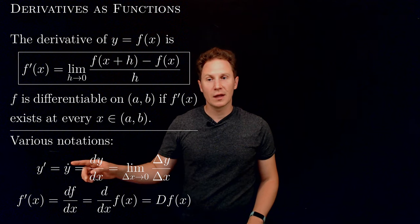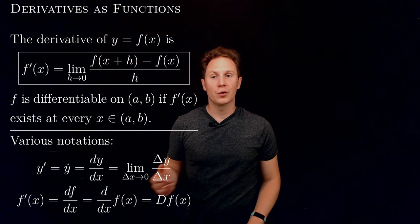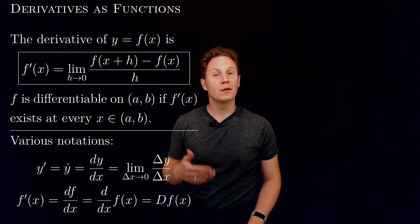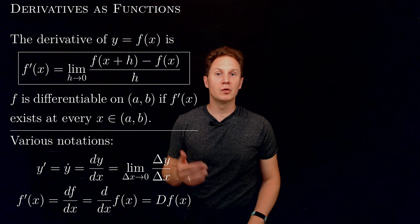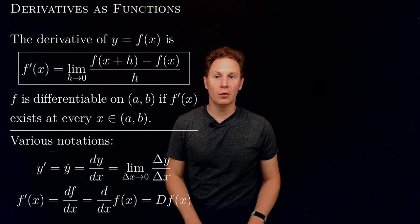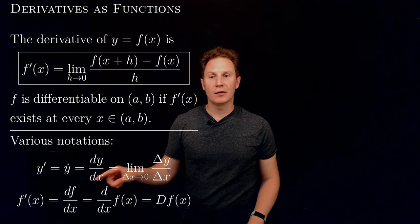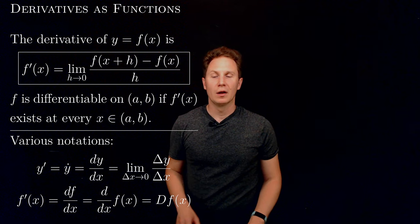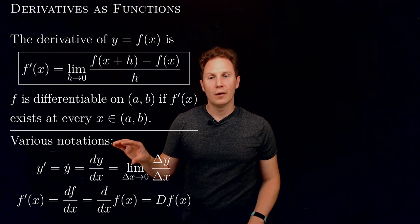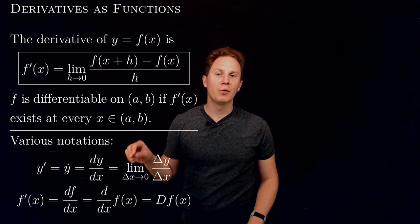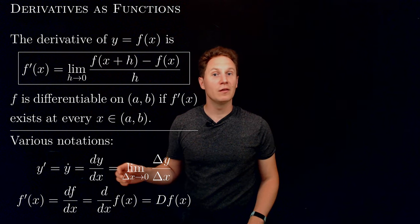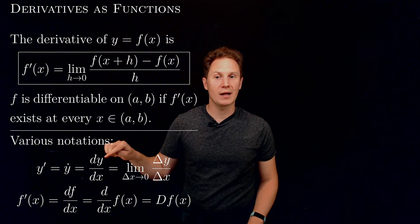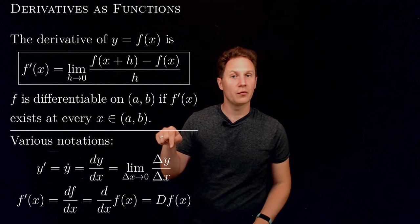The dot notation was used by Newton, so ẏ for Newton meant the derivative of the function y with respect to its independent variable. dy/dx or df/dx are notations introduced by Leibniz. A word of warning with these: we write dy/dx as if it were a fraction, but strictly speaking this is not a fraction, but rather the limit of a fraction.